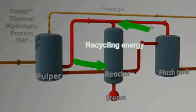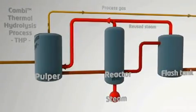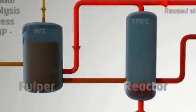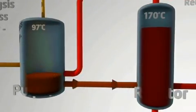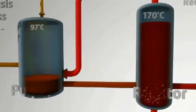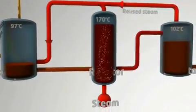The steam is reused in the pulper to pre-heat the incoming material. The material is then fed in batches to the reactor, where live steam is injected to reach 170 degrees centigrade.